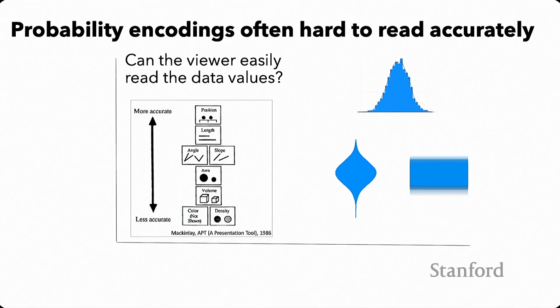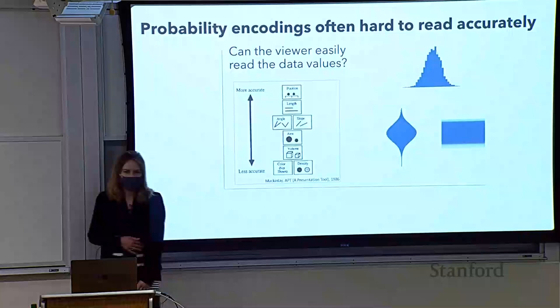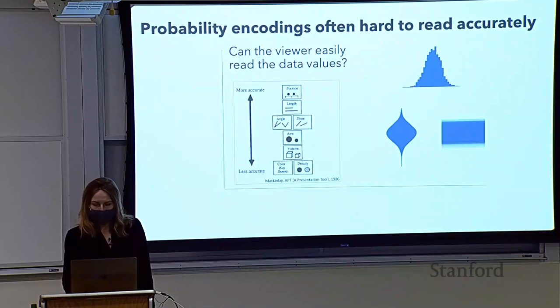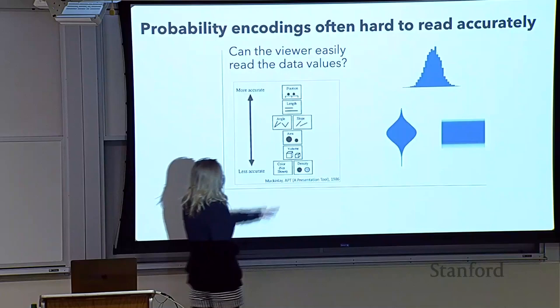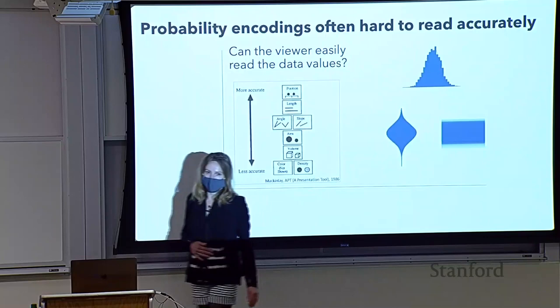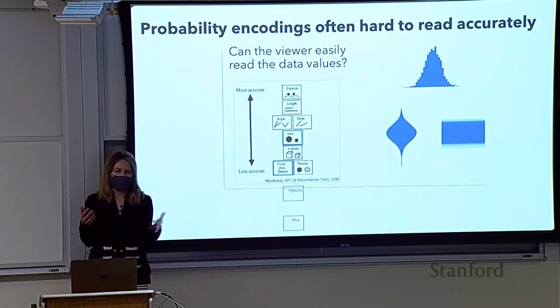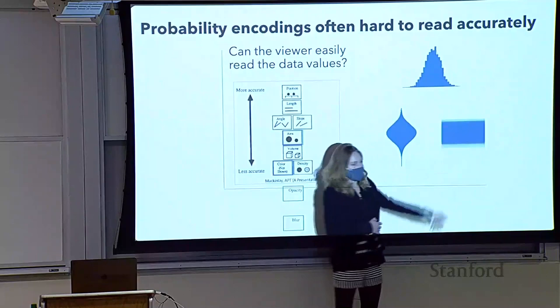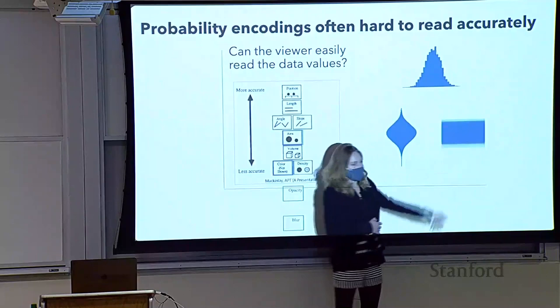When we look at probability encodings as a way to encode uncertainty, we run into effectiveness issues related to how well people can read the data from the visualization. The biggest problem is that we often want to use our most effective encodings — things like position — to show the data itself, and we tend to be left with less effective encodings to show probability. For instance, when we map probability to height in a density plot, we run into issues where people have to rely on area judgments, and people are not good at area judgments. The worst part is that some encodings that look the most like uncertainty — things like opacity and blur — make people think semantically about uncertainty, but these are some of the hardest for people to read data from.